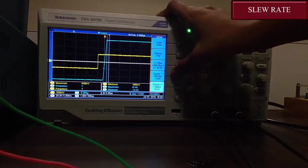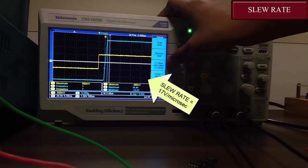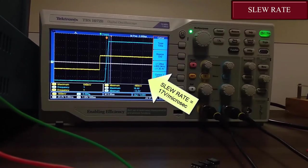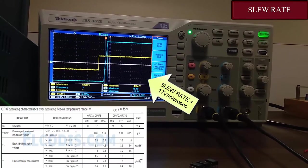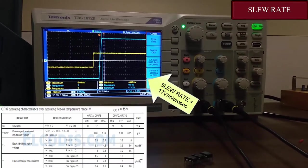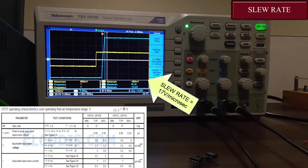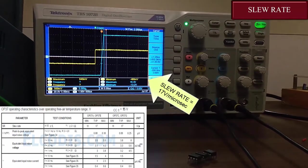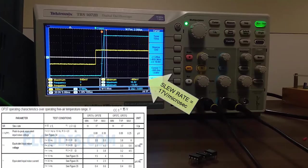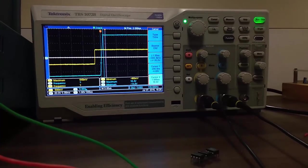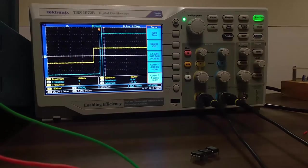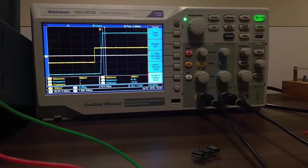Thus the slew rate is 17. According to the data sheet of OP37, the minimum value for slew rate is 11 and typical is 17. We have already got the typical value, so our OP37 is working according to the data sheet. That's all for the slew rate. Thank you very much.